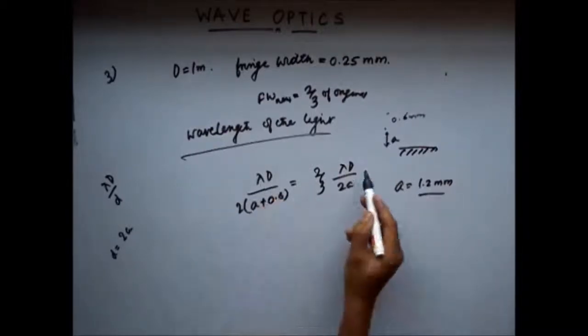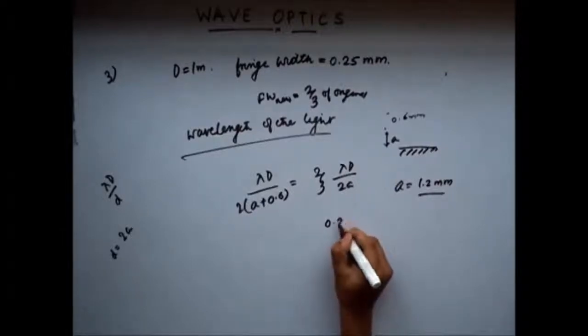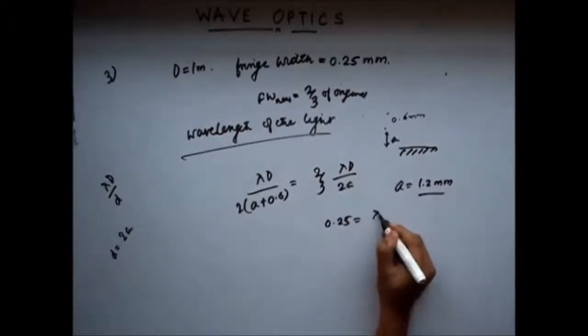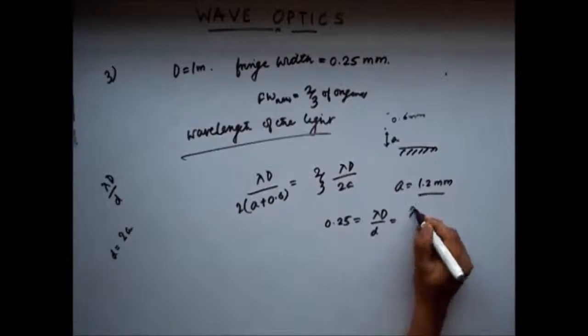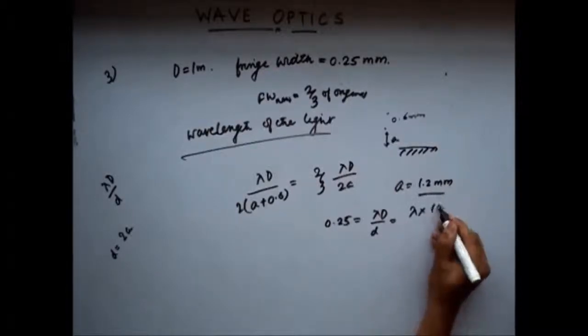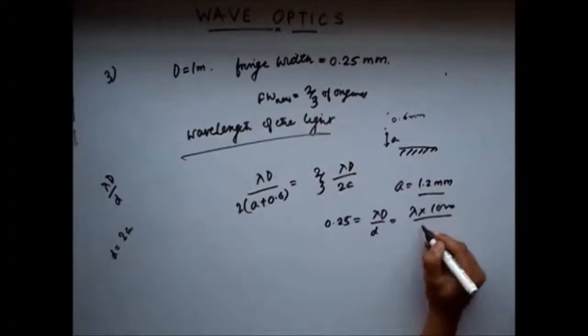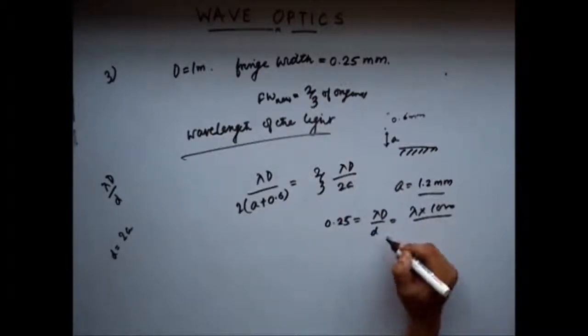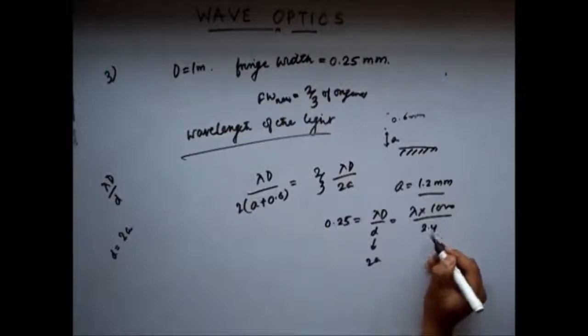Now, you put this value of a in this equation. The fringe width was given as 0.25. This is equal to lambda d by d. This is equal to lambda into distance is 1 meter, that is 1000 mm. And small d is 1.2 mm. So, this is equal to 2a, right. So, 2.4 mm.